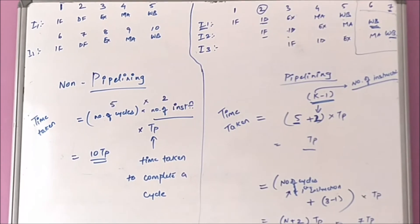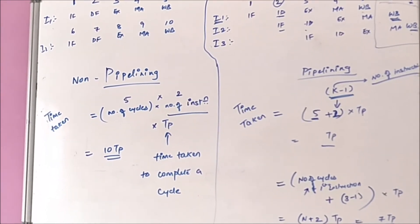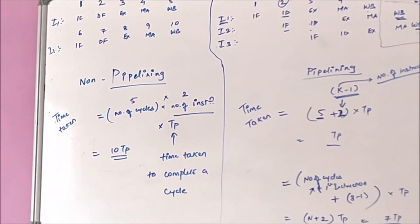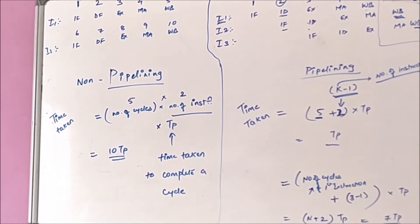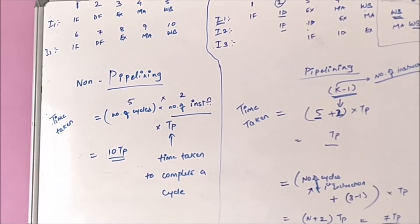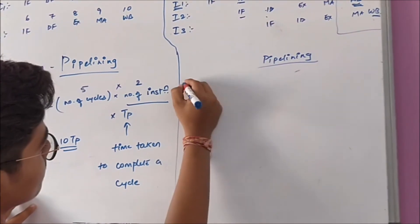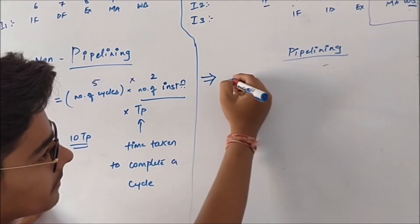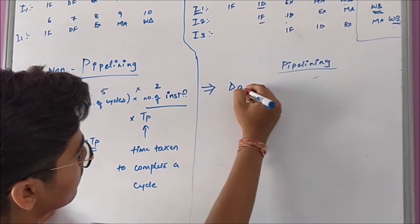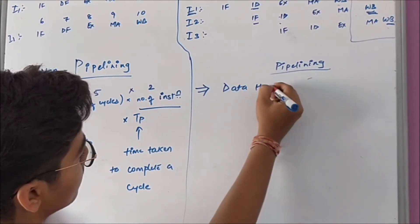Though pipelining has this much of advantage that it takes less amount of time than non-pipelining architecture, it also has limitations. What are the limitations? The problems with pipelining are called hazards. First is data hazard.